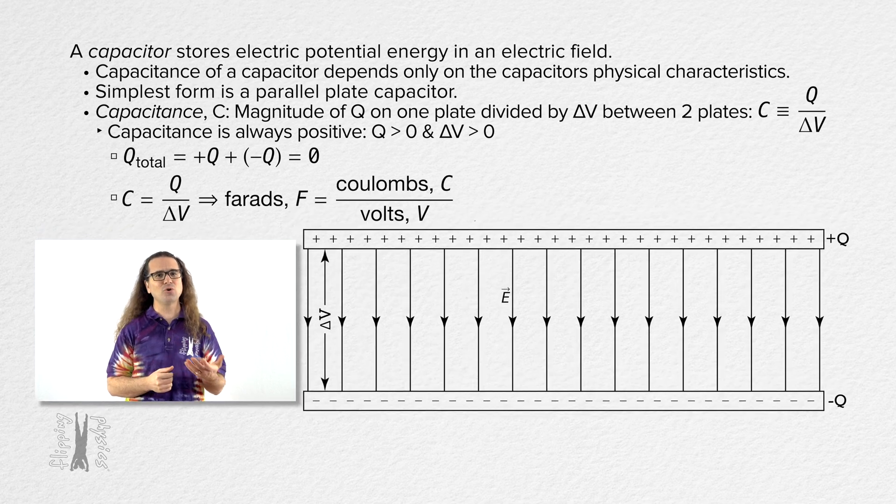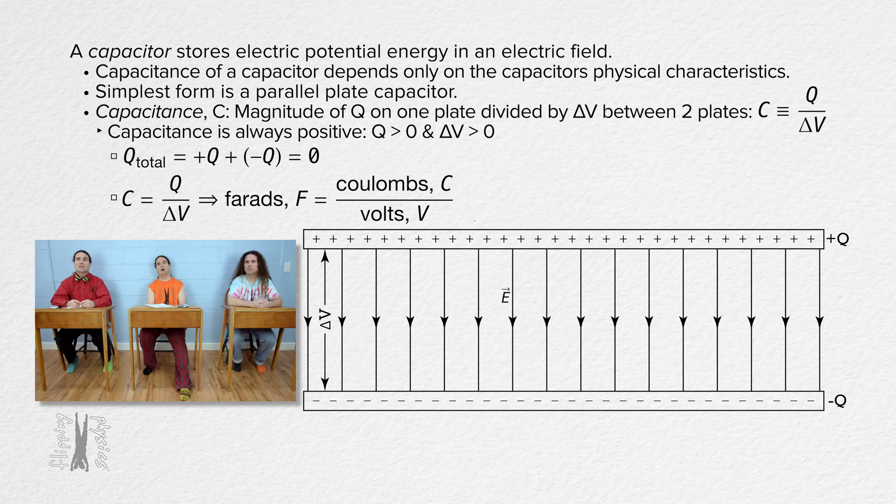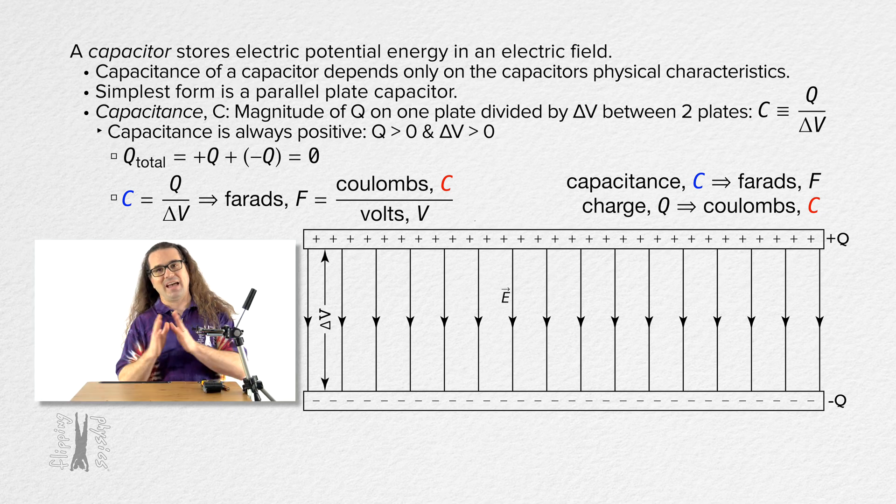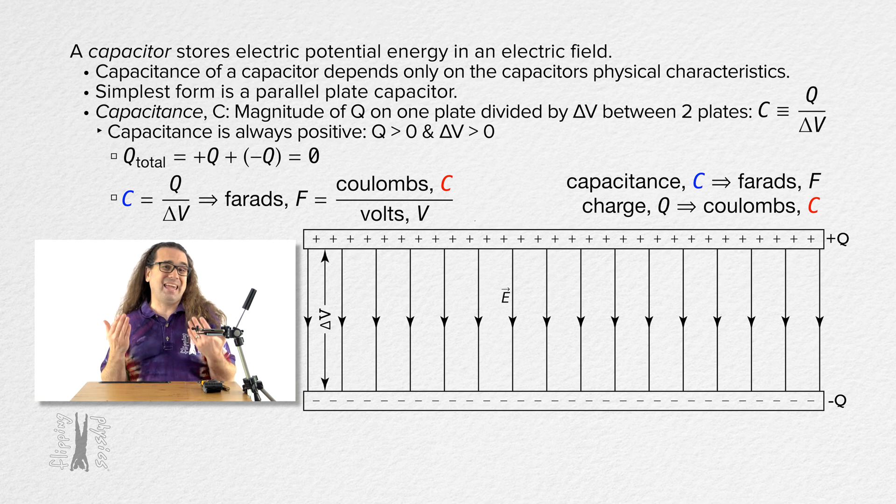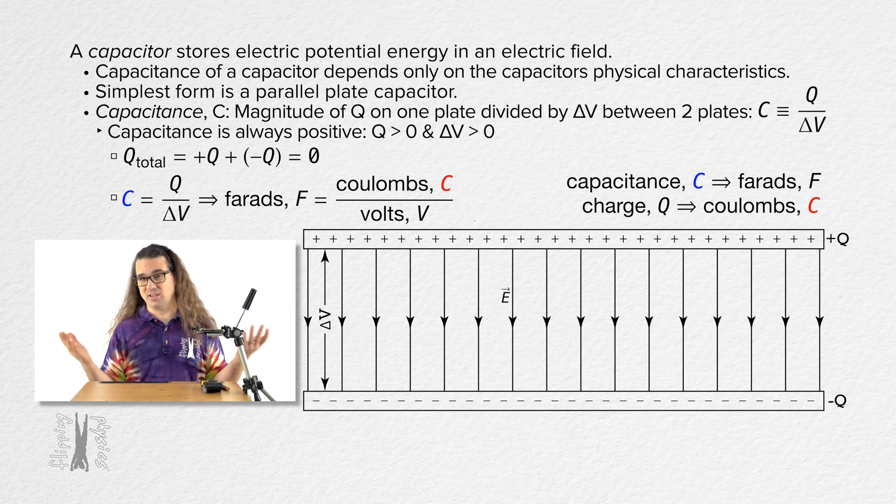The units on capacitance are coulombs over volts, which are called farads, for which the symbol is capital F. Hold up. So the symbol for capacitance is capital C, and capacitance is charge over electric potential difference, and the units for charge are coulombs, capital C. So in one equation we have capital C meaning both capacitance and coulombs? Well, kind of. I don't like that. I don't like that either. Okay, so yeah, I get it. Unfortunately, I cannot do anything about that. If it really bothers you or you are concerned it might confuse you, you could write coulombs' name in full for the charge unit to help distinguish. Alright.